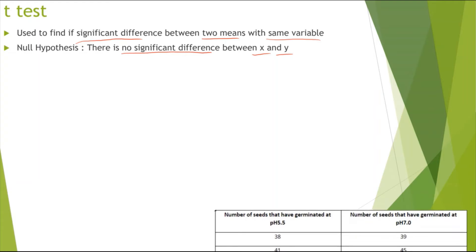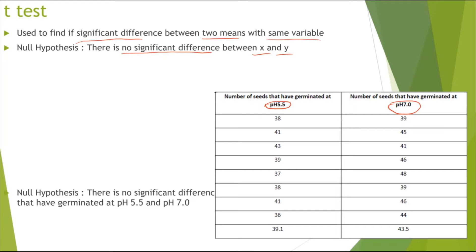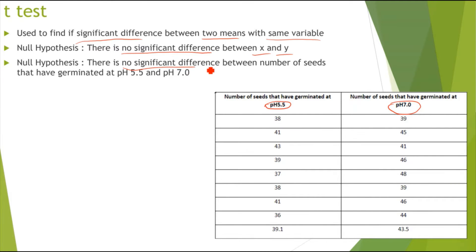This is better represented with an example. For example, if I'm looking at the number of seeds that have germinated and I've got different pH — pH 5.5 and pH 7 — I'm only changing pH and not changing anything else. The null hypothesis would be: there is no significant difference between the number of seeds that have germinated at pH 5.5 and pH 7. For a t-test, the degrees of freedom is the number of categories minus 2.